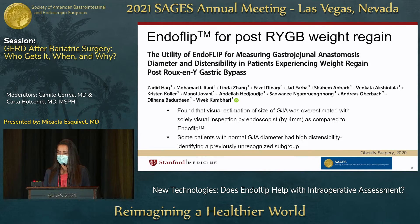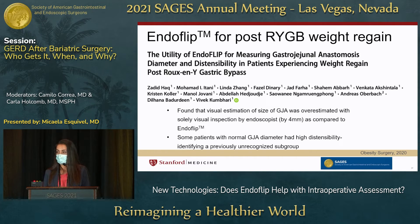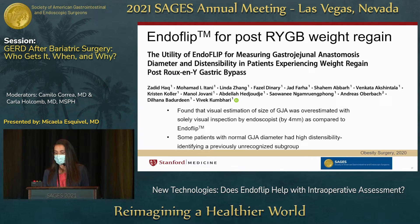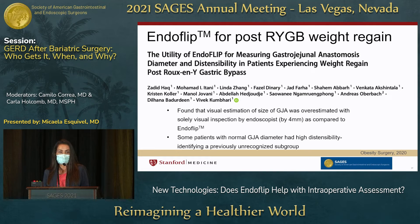For post-Roux-en-Y gastric bypass patients experiencing weight regain, this retrospective review of 21 patients compared Endoflip to proceduralist visual assessment of the gastrojejunal anastomosis diameter. It found that experienced endoscopists overestimated diameter by an average of just over 4 millimeters compared to objective Endoflip measurements — which has clinical implications for managing these patients. Additionally, some patients with a normal GJ anastomosis diameter had very high distensibility and were experiencing weight regain, identifying a previously unrecognized subgroup who may benefit from intervention.